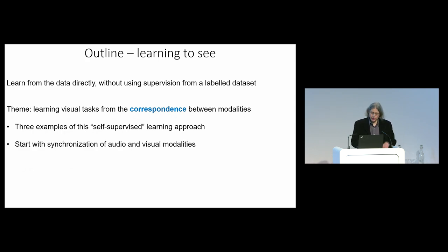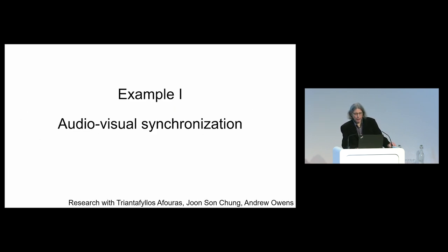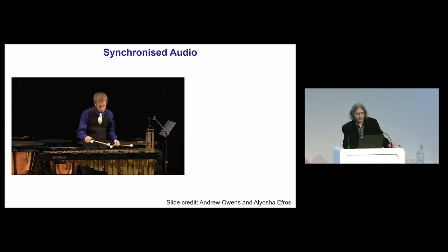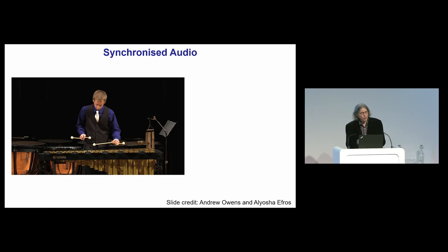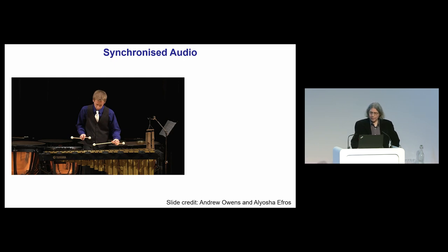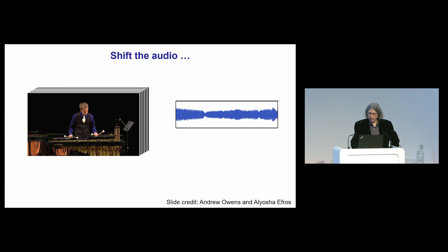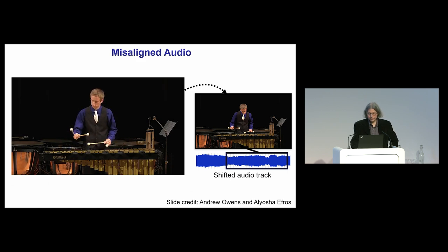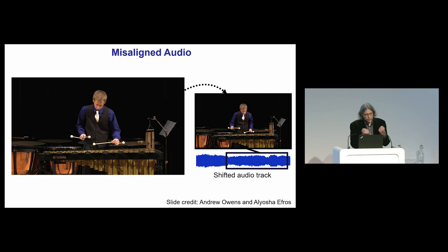The first example: the modalities will be audio and visual. This is, of course, what we have in the world — these synchronised signals. The audio and visual are synchronised. We can make them unsynchronised by shifting the audio. Just this difference — that we get a synchronised signal versus an unsynchronised one — is going to be the supervision we use to train the network. I'm going to illustrate this with talking heads. If we think of the Turing baby, what is the baby going to see first? It's going to see its parents speaking.